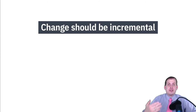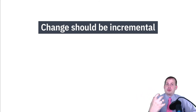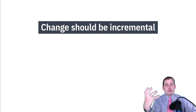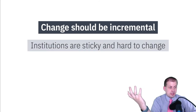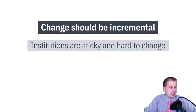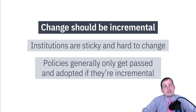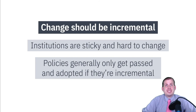The main takeaway is that change should be incremental. There is a place for sudden rapid social change, but to get there the institutions need to be in a position to be replaced — if they're firmly entrenched, it's very hard to rip them out and replace them. Institutions, as we've learned, are very sticky and hard to change. Policies generally only get adopted if there's political will, and there's generally political will if changes are slower and incremental.